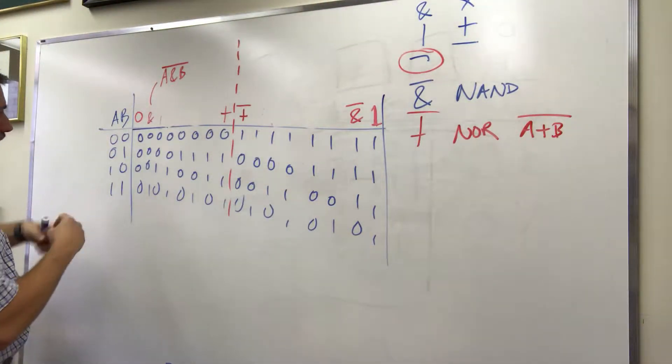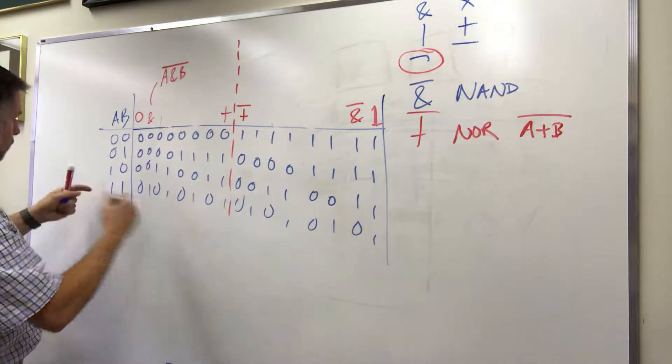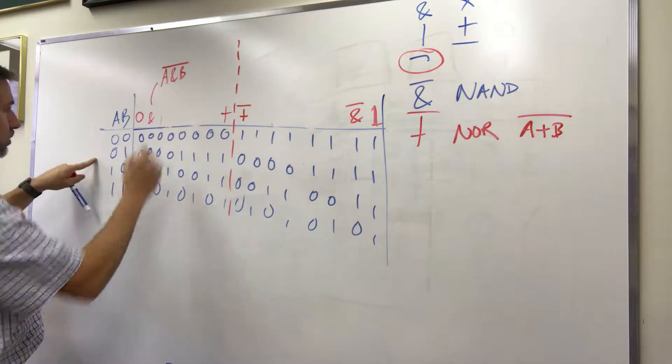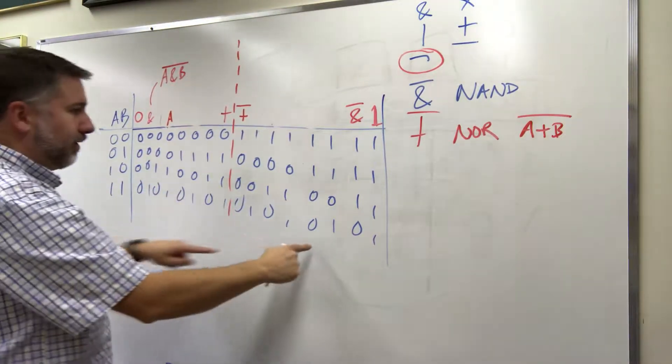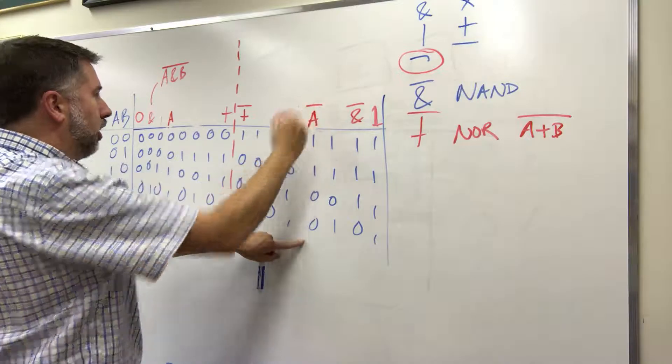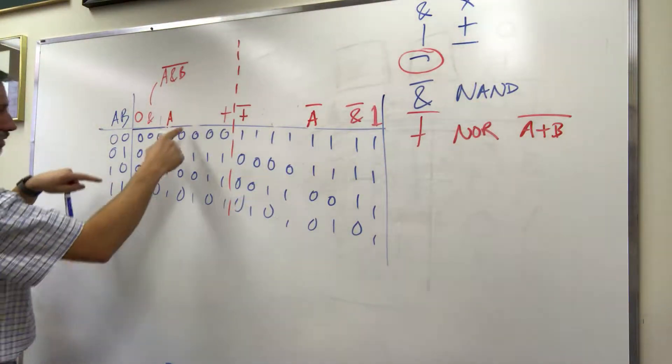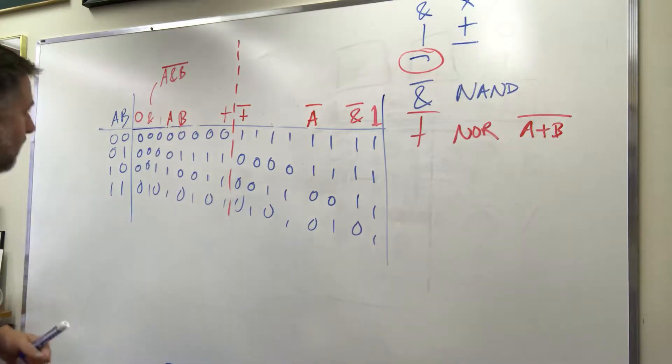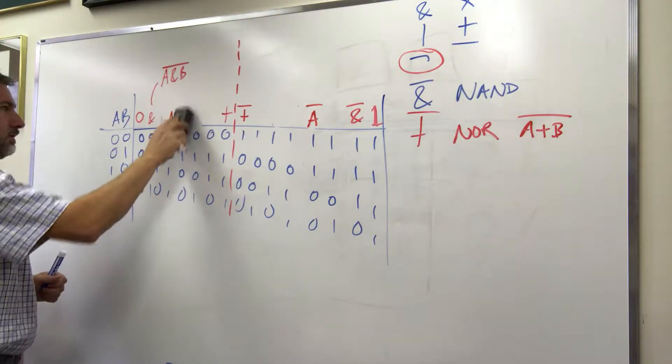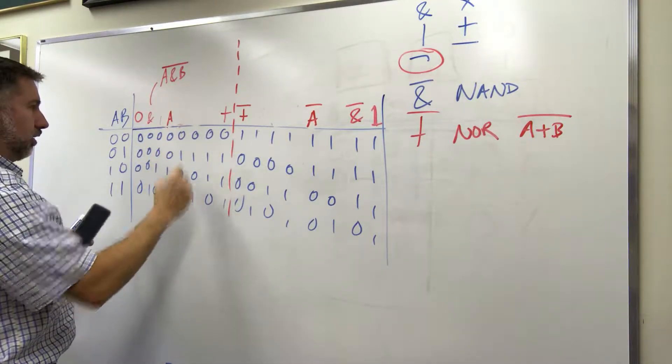Right here we can see this is a function of two variables a and b where the output is just a. It's the same as a in all cases. And there's an opposite here, a prime, same thing here 0, 1, 0, 1, this is b. Not that one. The one right beside it is b, and it's again not that useful.